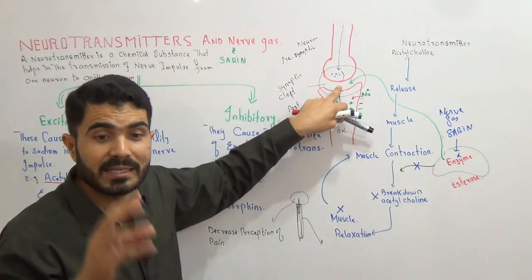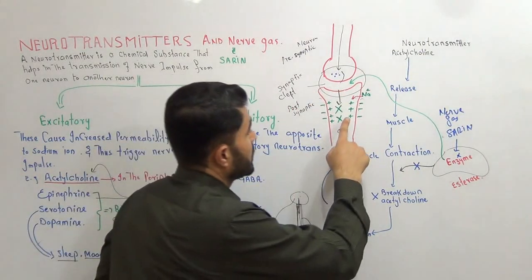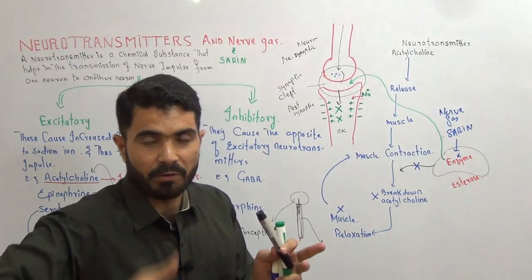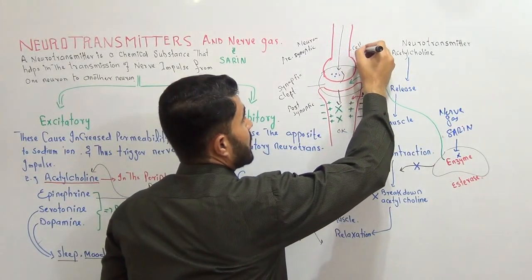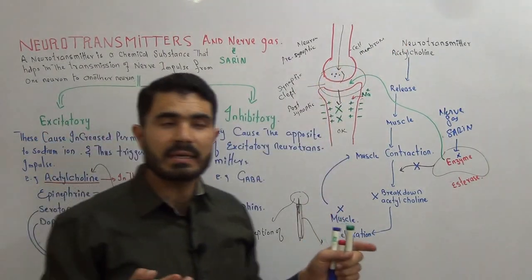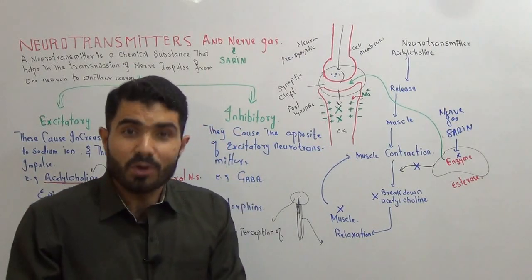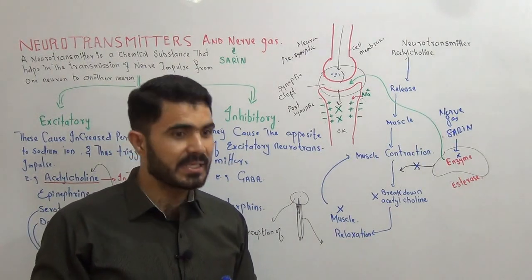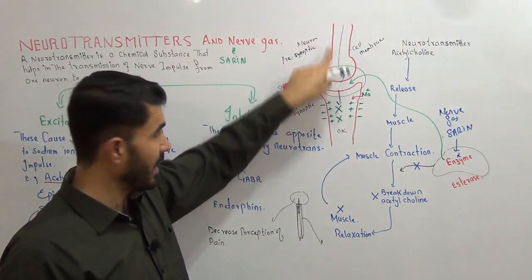In the synaptic cleft you will find neurotransmitters. Now, along the membrane of the neuron — because the neuron is also a cell — it has a cell membrane. Many students don't think of the cell membrane as part of the cell, but the neuron is a cell and therefore has a cell membrane.